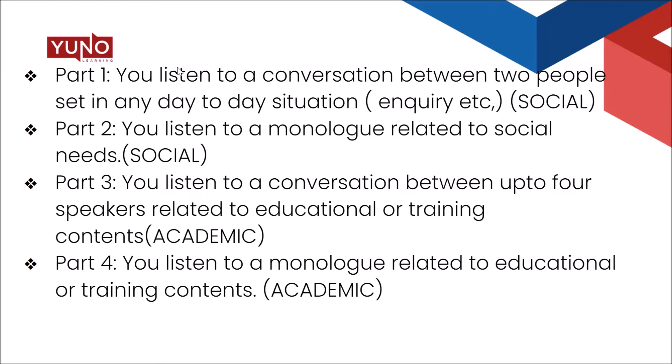Parts three and four are more difficult. In part three, you listen to a conversation between up to four speakers — two, three, or four — so you should be able to follow who is saying what. The conversation is related to educational or training contents and is academic. In part four, you listen to a monologue again where just one person speaks, and this monologue is also related to educational or training contents and is academic.